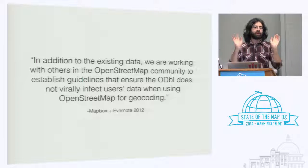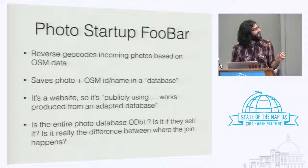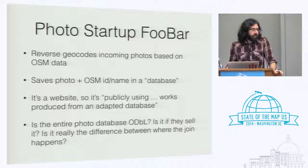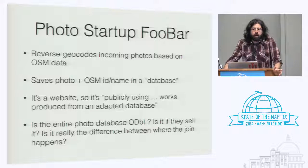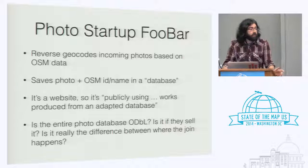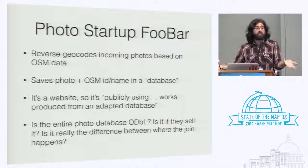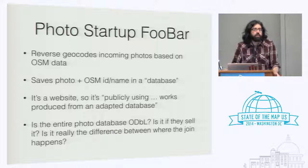At some point the lawyer at Foursquare was like, 'just stop harassing me to read the ODbL with you again.' Taking a step back from Foursquare: one of my buddies is doing a photo sharing startup and wants to reverse geocode the photos. I was about to publish this index with all the awesome OSM data, but I told him you're going to need to figure out the license — figure out if you're infecting your photos or your user database. And he was like, 'that doesn't sound like fun.'